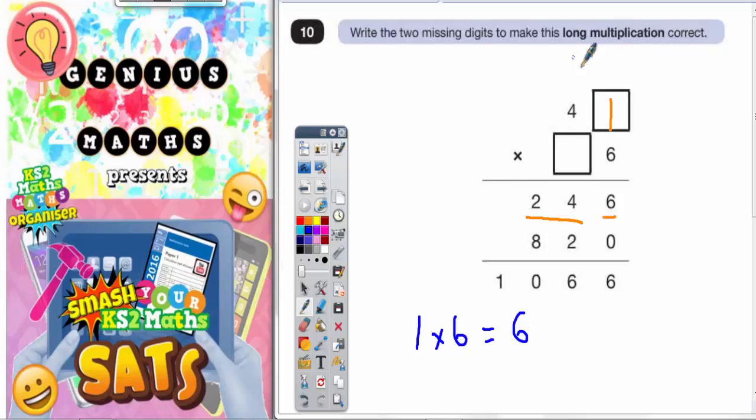Now remember when you're doing long multiplication, whatever you're timesing by here is in the tens column. So you put a magic 0 on the end, which is why the 0 is there, and then you would do this number times by the 1.